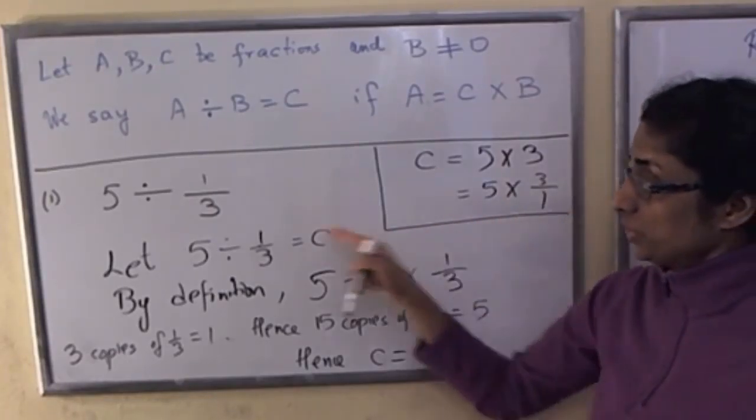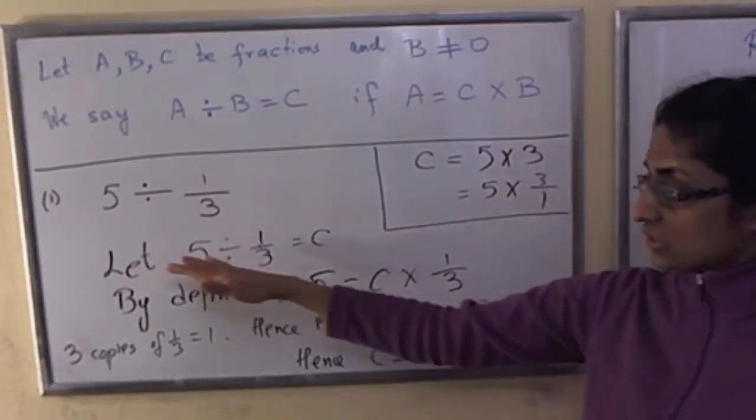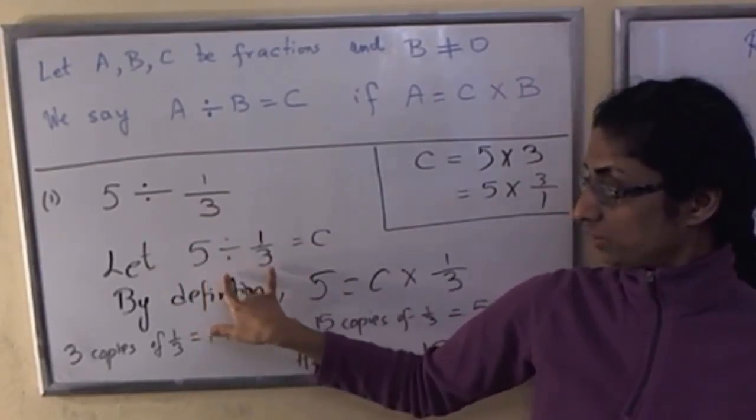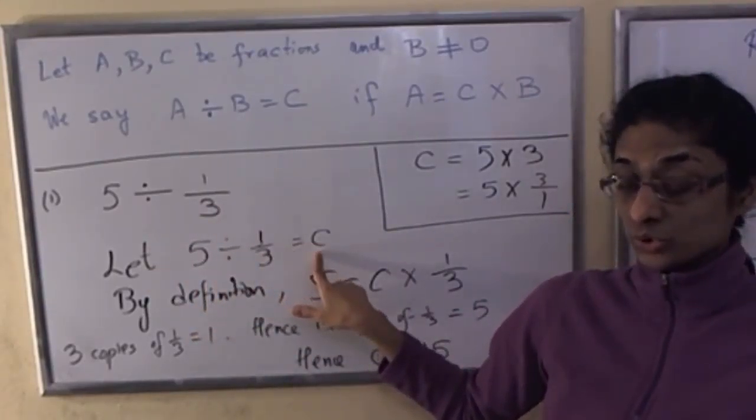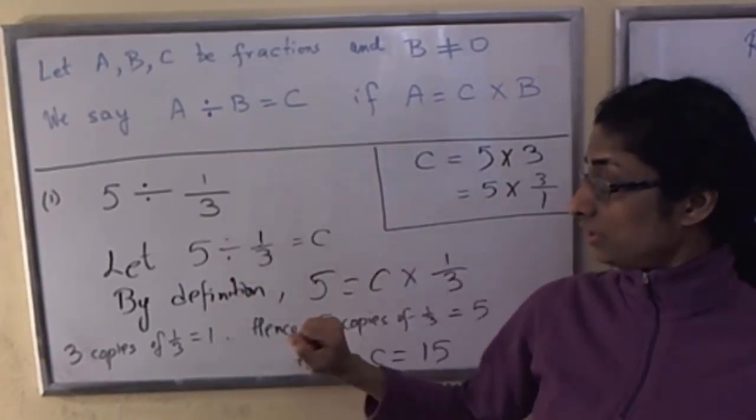But to compute a whole number divided by a fraction, for now, use this logic. Start by writing that 5 divided by 1 third is some number, use a letter to denote that. Using the definition of division,